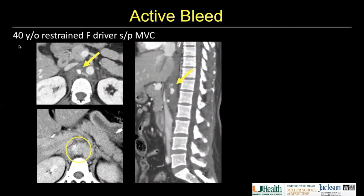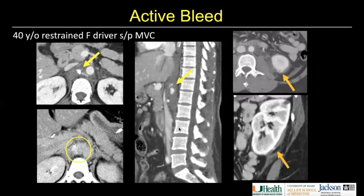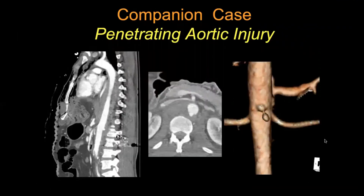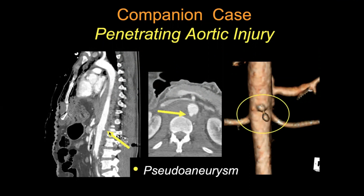In a different case of status post MVA, there is active bleed in the retroaortic region, periaortic. Note on the delayed images how it changes morphology and increases in size. This patient was embolized and additionally had a left lower pole laceration with a small amount of active bleed and perirenal hematoma. A companion case with a gunshot wound in the retroperitoneum with an aortic pseudoaneurysm and retroperitoneal hematoma treated with endovascular repair.